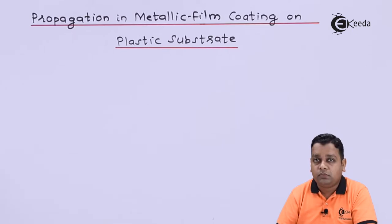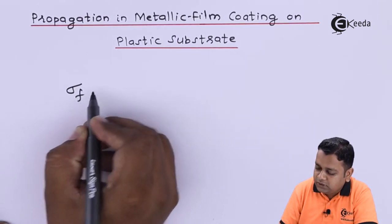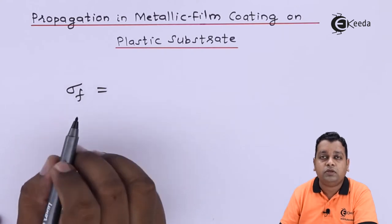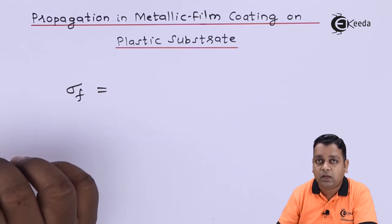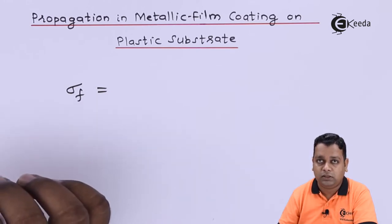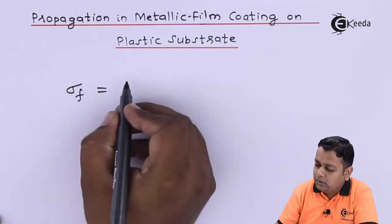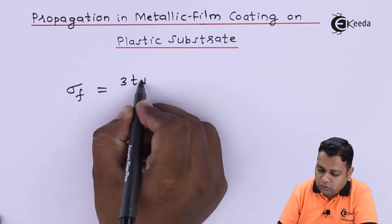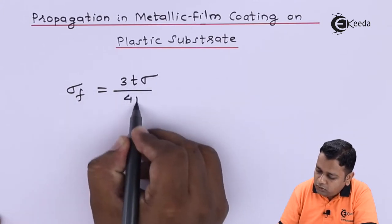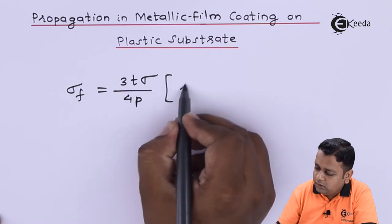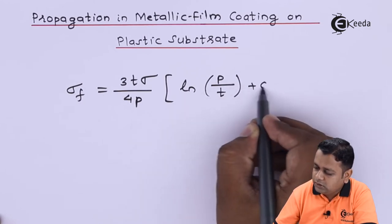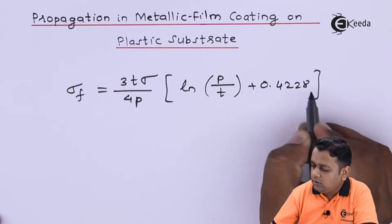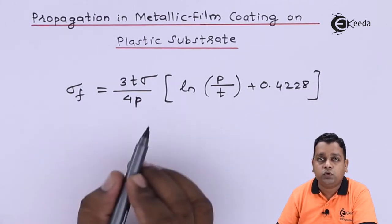The conductivity of the metallic film is denoted by sigma_f. It is calculated using the conductivity of the bulk metal, along with the thickness of the metallic film and the electron mean free path. The formula is: sigma_f = (3 × t × sigma) / (4 × p) × [ln(p/t) + 0.4228]. This formula is very important, as the next two problems are also based on it.